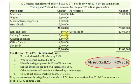Selling Expenses Rs. 2,40,000. General Expenses Rs. 1,60,000. Office Salary Rs. 4,80,000. And Net Profit for the year Rs. 2,40,000. Total Rs. 12,00,000.